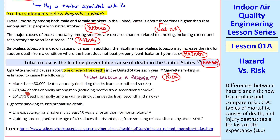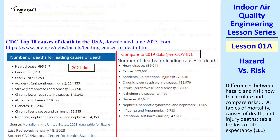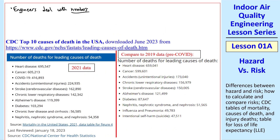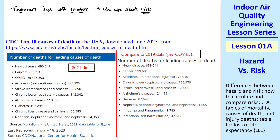These three statements give the number of deaths among all people, men, and women due to secondhand smoke. These are all risks. You can think about the other two on your own. Engineers deal with numbers, not just concepts, so we care about risk more than about hazard.